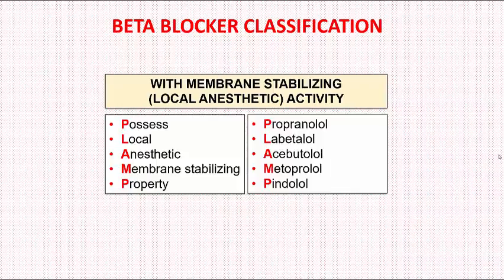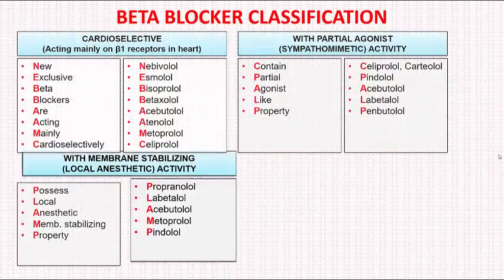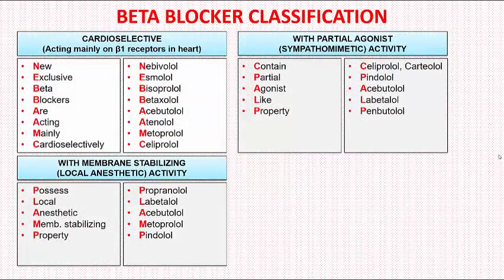Now we will look at all three types in a single slide. To recapitulate: cardioselective beta blockers can be remembered by 'New Exclusive Beta Blockers Are Acting Mainly Cardioselectively'; drugs with partial agonistic and sympathomimetic activity by 'Contain Partial Agonist Like Property'; and drugs with membrane stabilizing or local anesthetic activity by 'Possess Local Anesthetic or Membrane Stabilizing Property'.